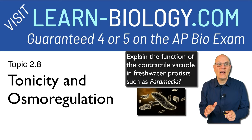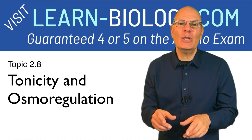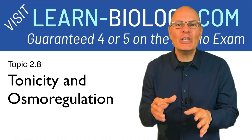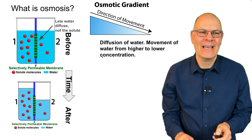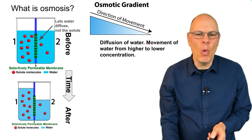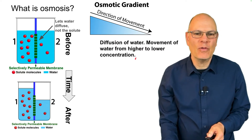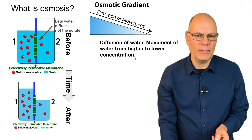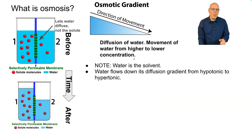Explain the function of the contractile vacuole in freshwater protists such as paramecia. So let's start by defining what osmosis is: it's the diffusion of water. Water diffuses like everything else, meaning water moves from higher to lower concentration. Water is the solvent of life, so we have to pay attention to how it moves. Water flows down its diffusion gradient from hypotonic to hypertonic.